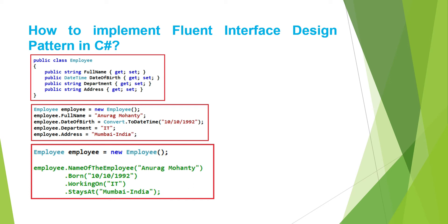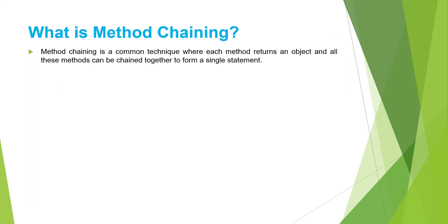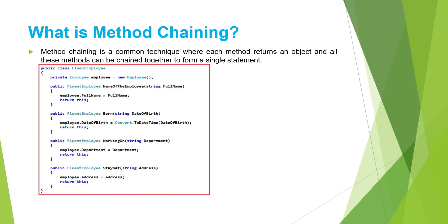To achieve this we have something called method chaining. The point to remember is: fluent interface is the concept and method chaining is its implementation. Method chaining is a common technique where each method returns an object, and all these methods can be chained together to form a single statement. In order to achieve this, first we need to create a wrapper around the Employee class — here FluentEmployee is the name of the wrapper. We create methods for each property of the Employee class, and notice that the return type of each method is set to FluentEmployee.